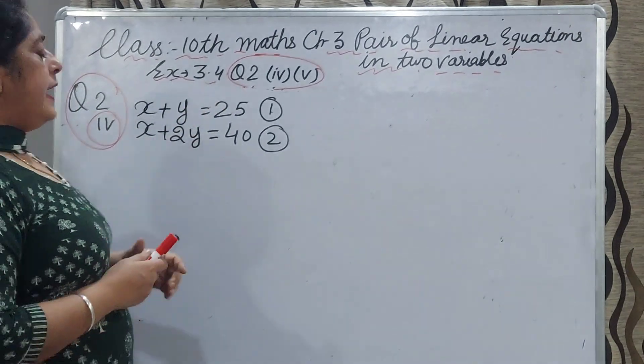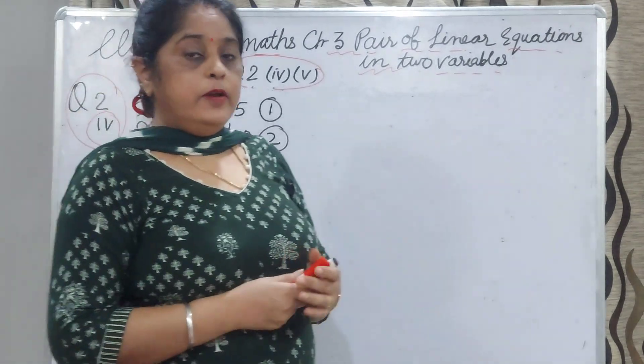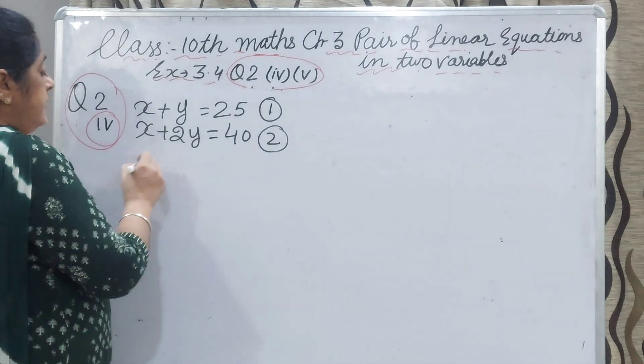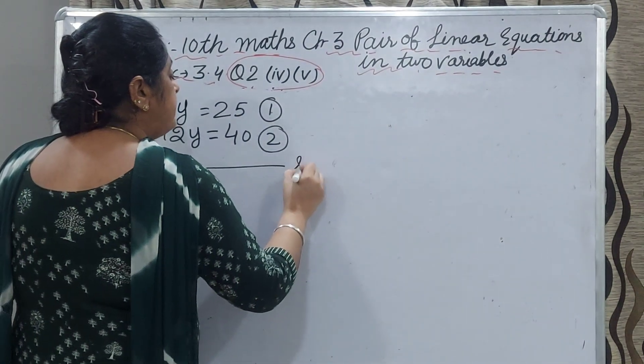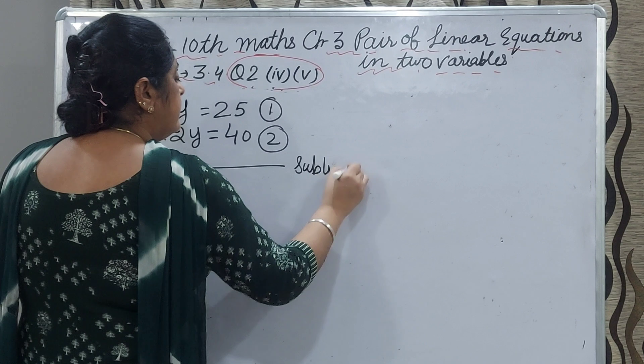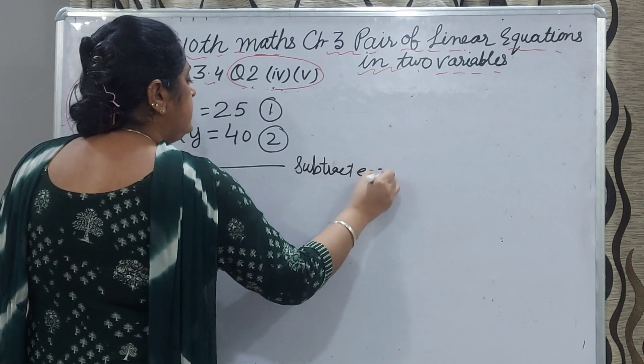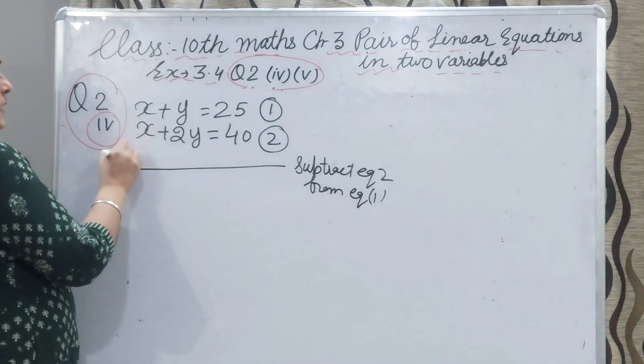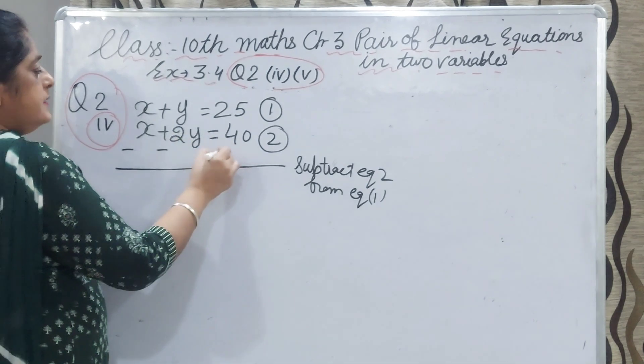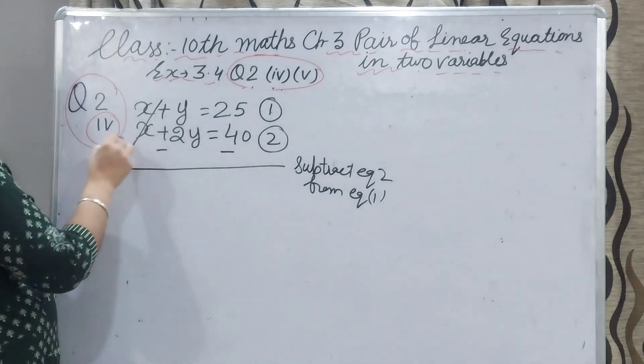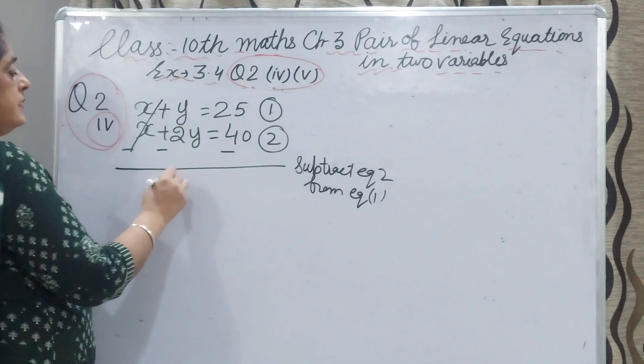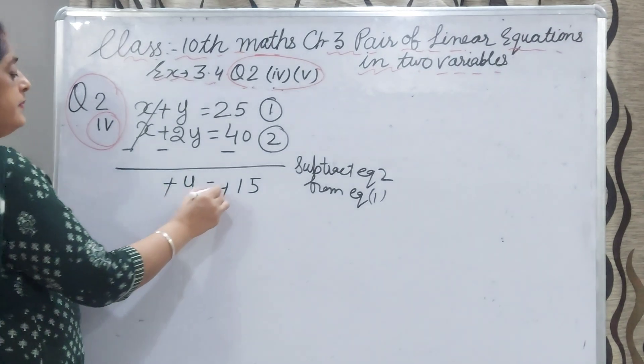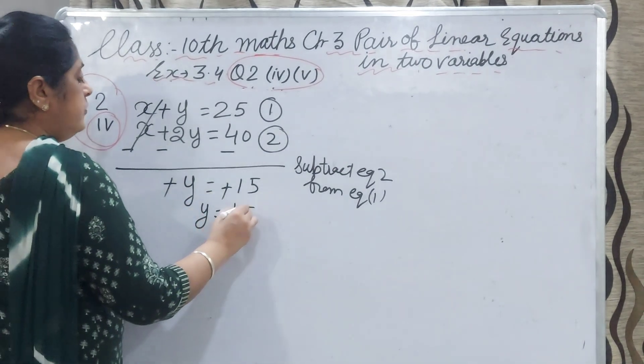I have written the equations 1 and 2 here: x plus y equal to 25 and x plus 2y equal to 40. So we have to eliminate x. We have to change the sign, means subtract equation 2 from equation 1. We will change the sign, it will be minus. x and minus x will cut down, minus y equal to minus 15. Minus and minus will be cancelled and y equal to 15.